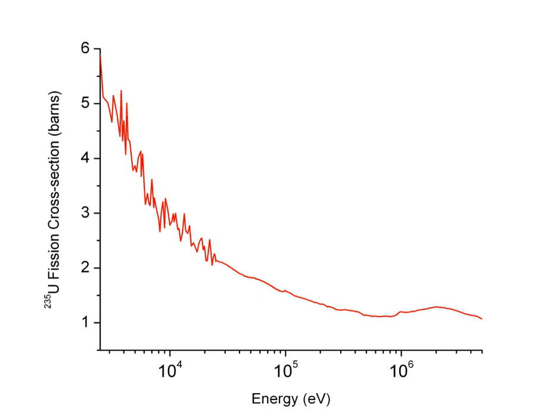The standard unit for measuring the cross-section is the barn, which is equal to 10−28 m2 or 10−24 cm2. The larger the neutron cross-section, the more likely a neutron will react with the nucleus.